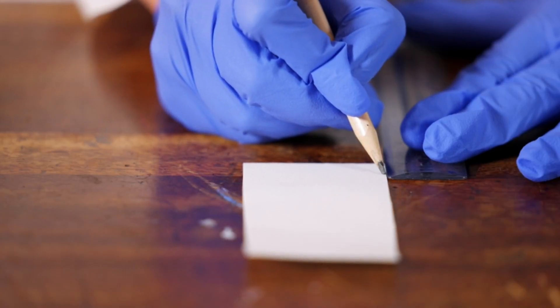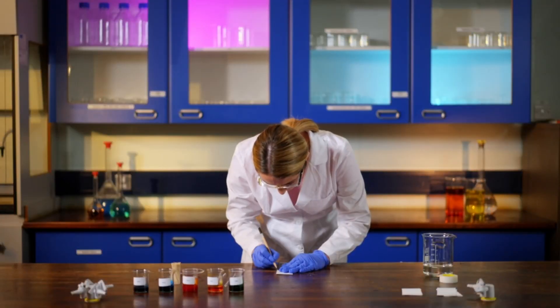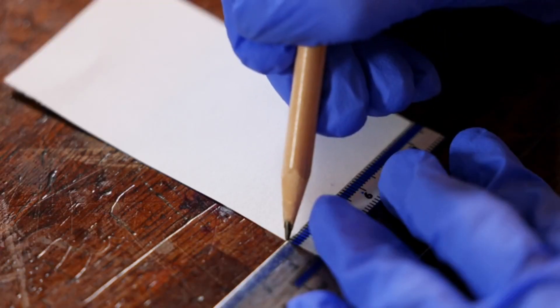Start by putting chromatography paper down on a clean, flat surface. Now use a pencil and ruler to draw a straight line about one centimeter from the bottom of the paper.